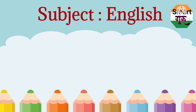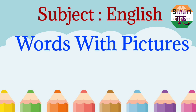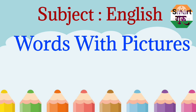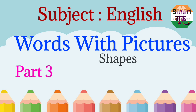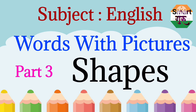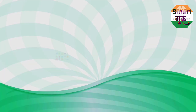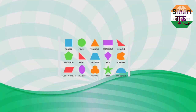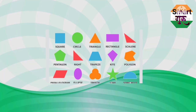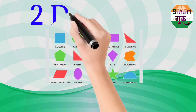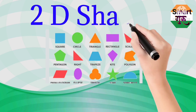Subject: English. Words with pictures, Part 3 — Shapes. Let's see the different types of shapes. 2D Shapes.